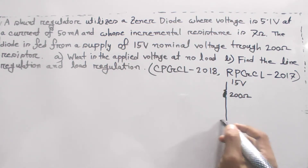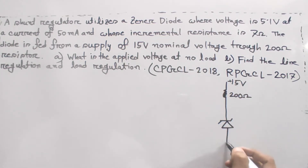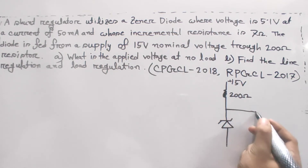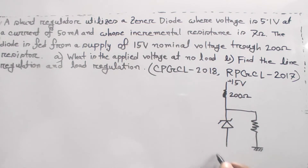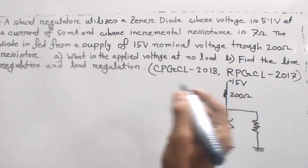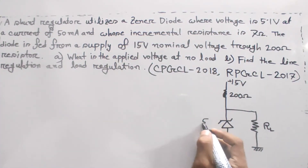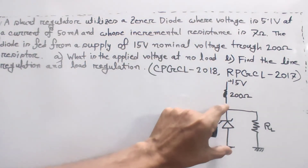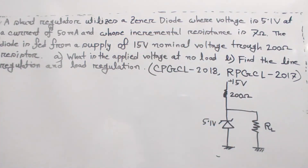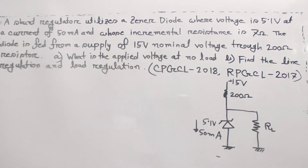Generally the generator is connected with plus and minus terminals. The load resistance is connected, and the zener general voltage is 5.1 volt. The given incremental resistance and general current are 50 milliampere.